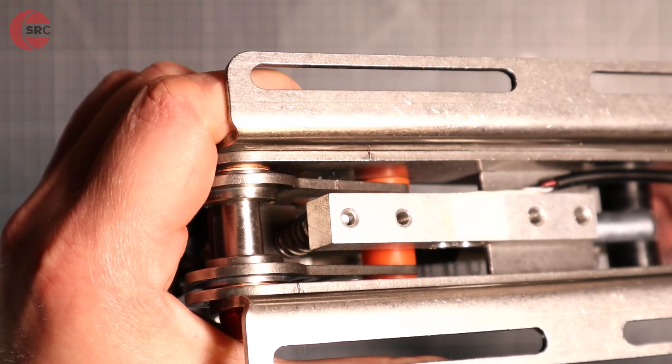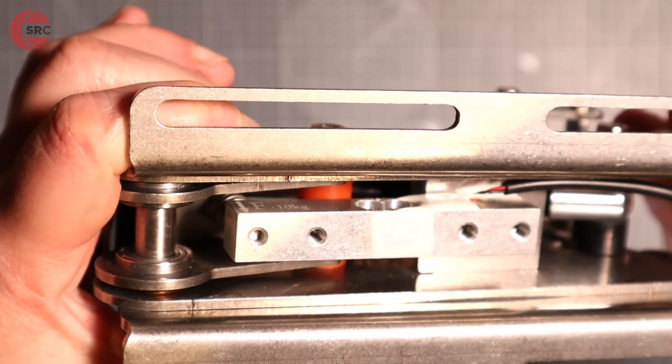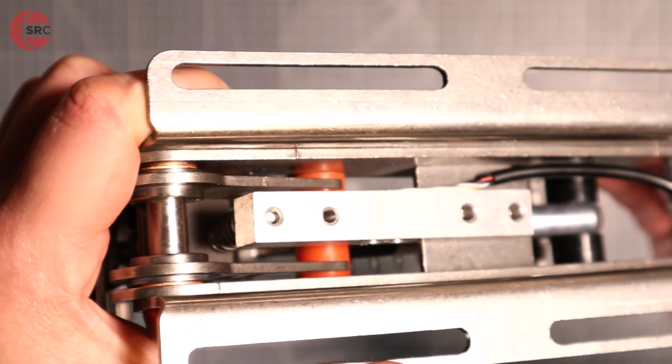The rectangle bar is a load cell. When the pedal is pressed, a small spring is compressed against the load cell, registering the input.